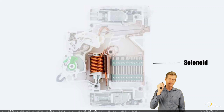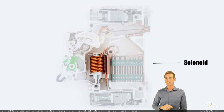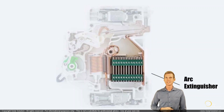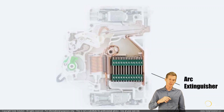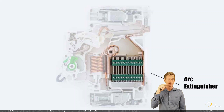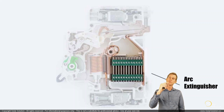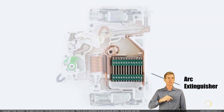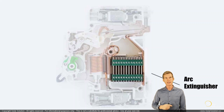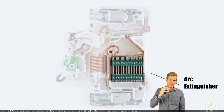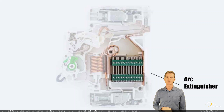Another important component is the arc extinguishing chamber, which does exactly what it says — it extinguishes an arc. When the breaker trips, especially with DC current which doesn't fluctuate, opening the contacts creates a very strong electrical arc — like a little lightning inside the breaker. The breaker redirects that arc toward the arc extinguishing chamber where the energy is safely dissipated and the arc slowly extinguishes by itself.